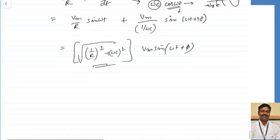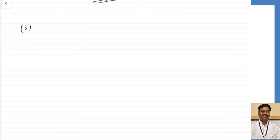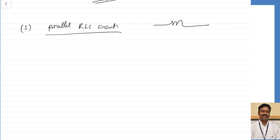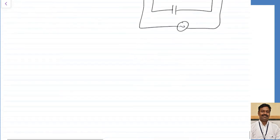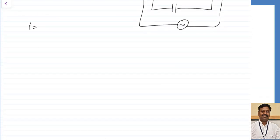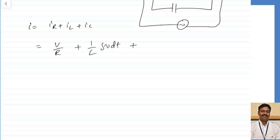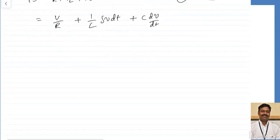We are going to solve the RLC parallel circuit case to clarify how this term comes. For a parallel RLC circuit, there is a resistance, an inductance, and a capacitance. When AC is applied, the total current I is equal to IR plus IL plus IC. This I can write as V by R plus 1 by L into integration of V dt plus C into dV by dt.